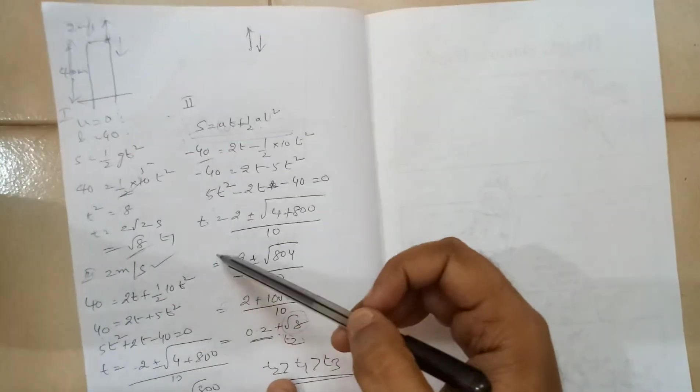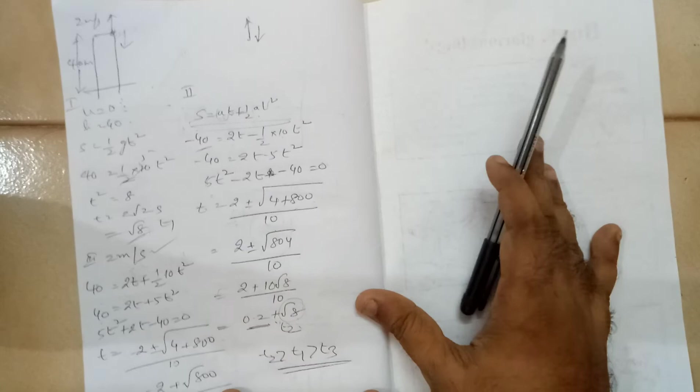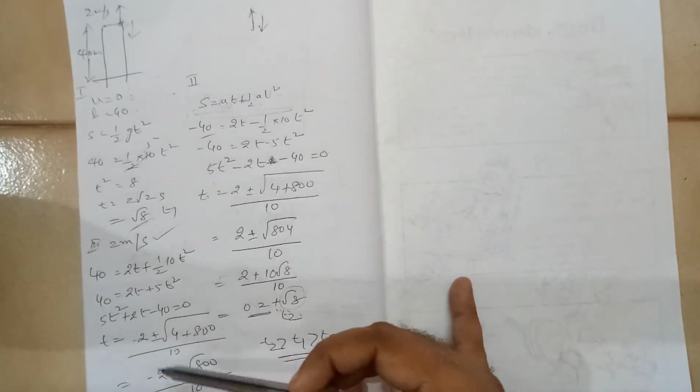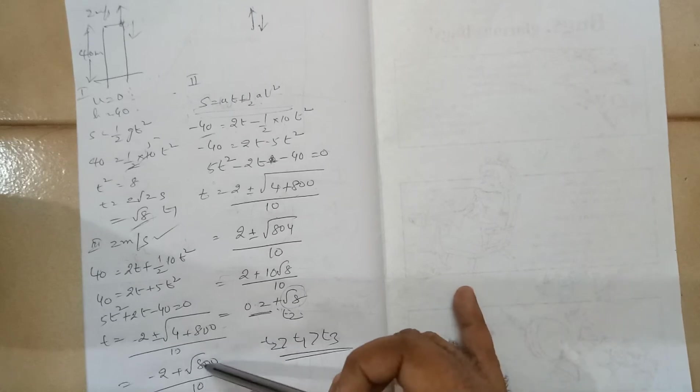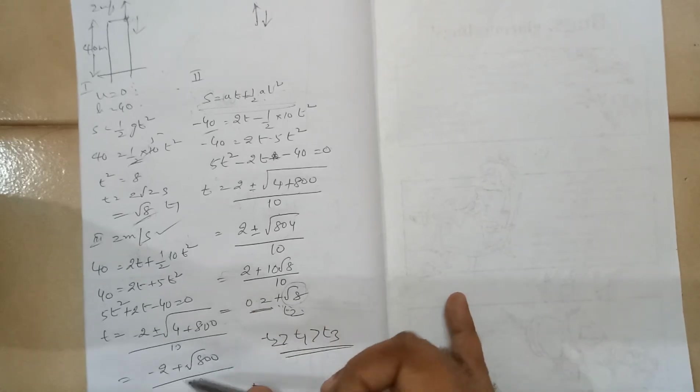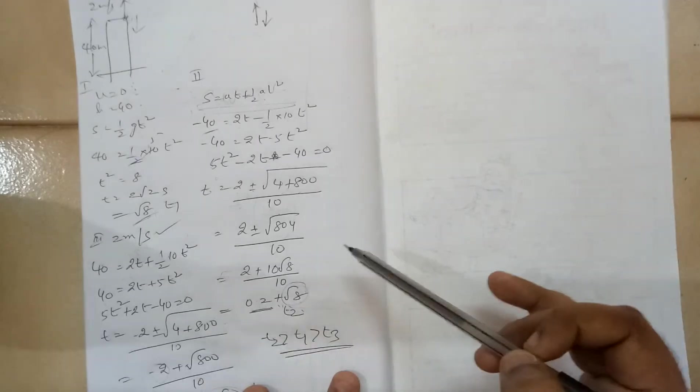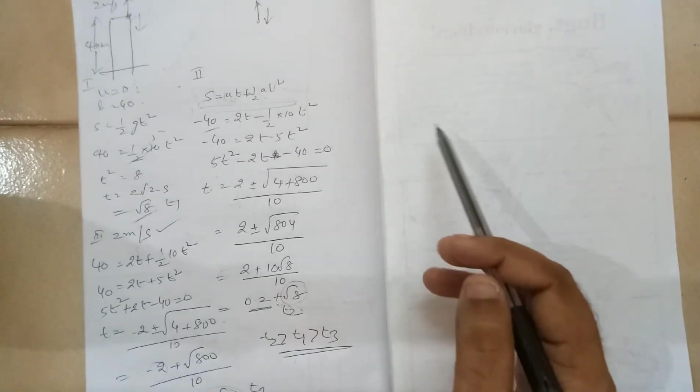So when you solve this equation, this is also a quadratic equation. So here when you solve it, you get minus 2 plus or minus root 804 by 10. If you take minus, this is already minus. Again minus root 800, total value will be minus.